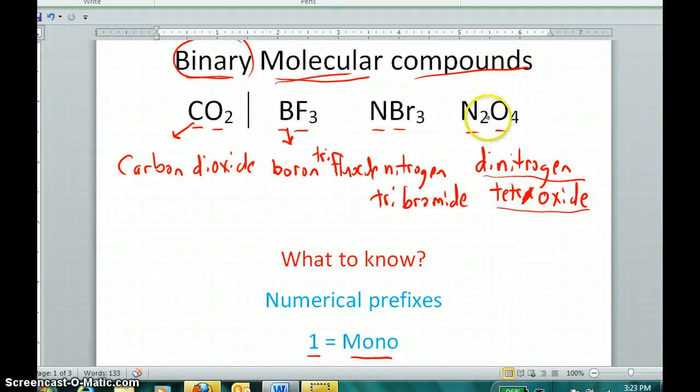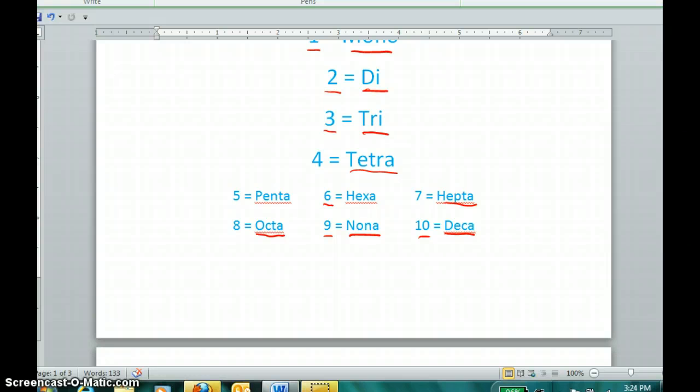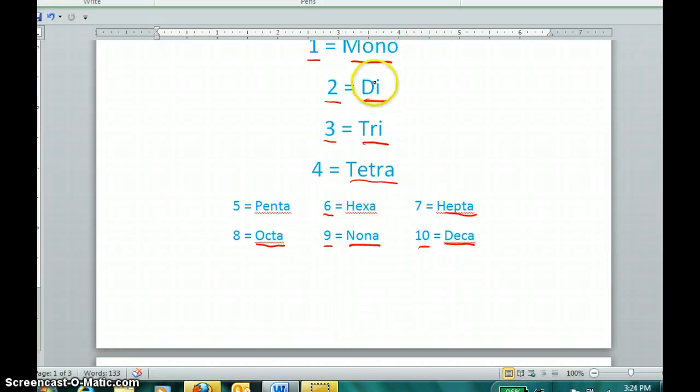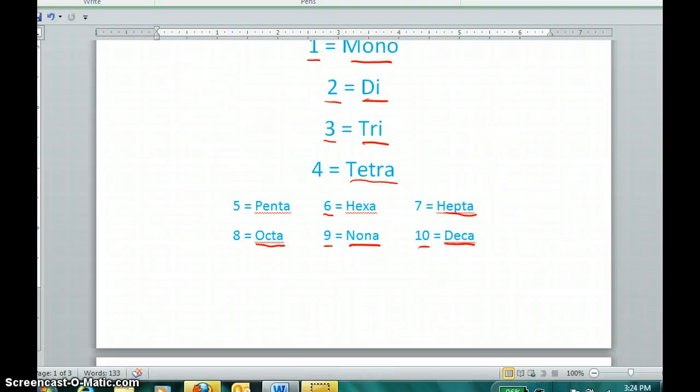We would drop the O or A from a prefix. And all but two of them have O's or A's. Never drop the I. Always keep the I. But if you have an O or an A at the end of one of these prefixes, and it precedes an O or an A, drop the O or A from the prefix to name the compound. So, pretty simple rules.